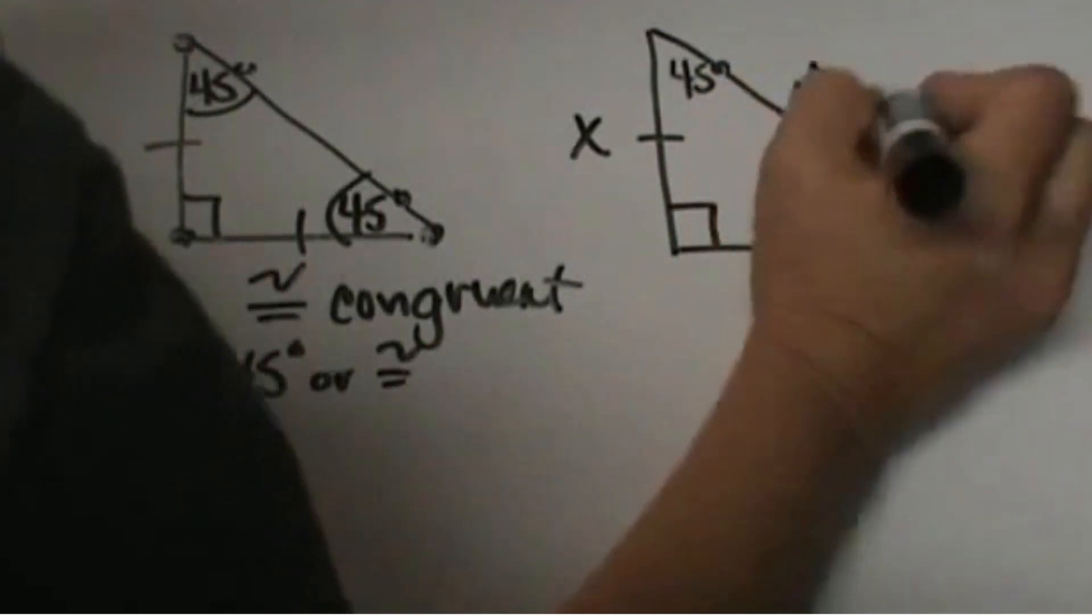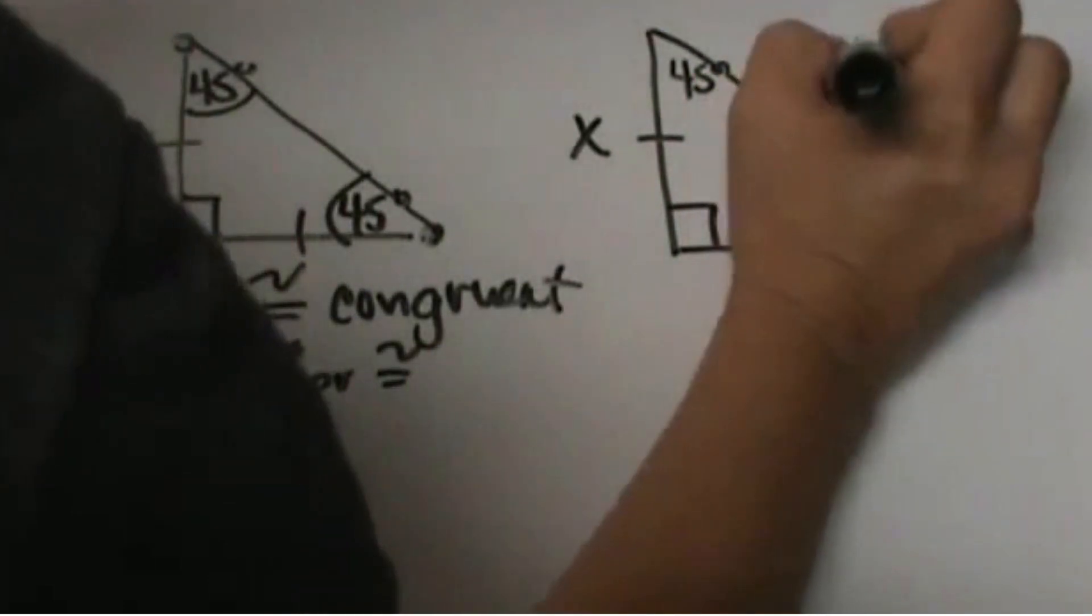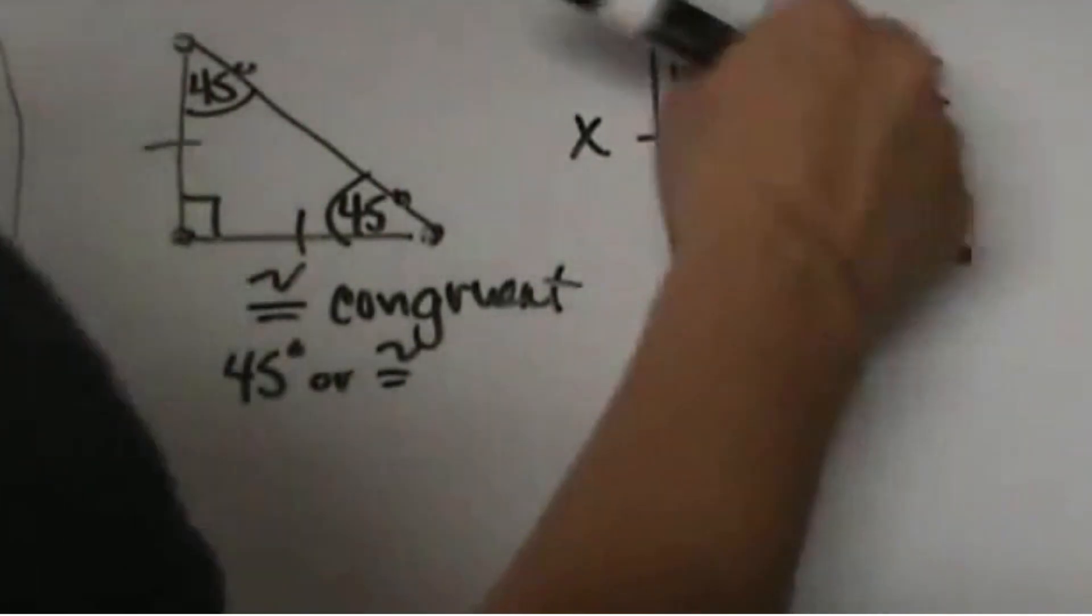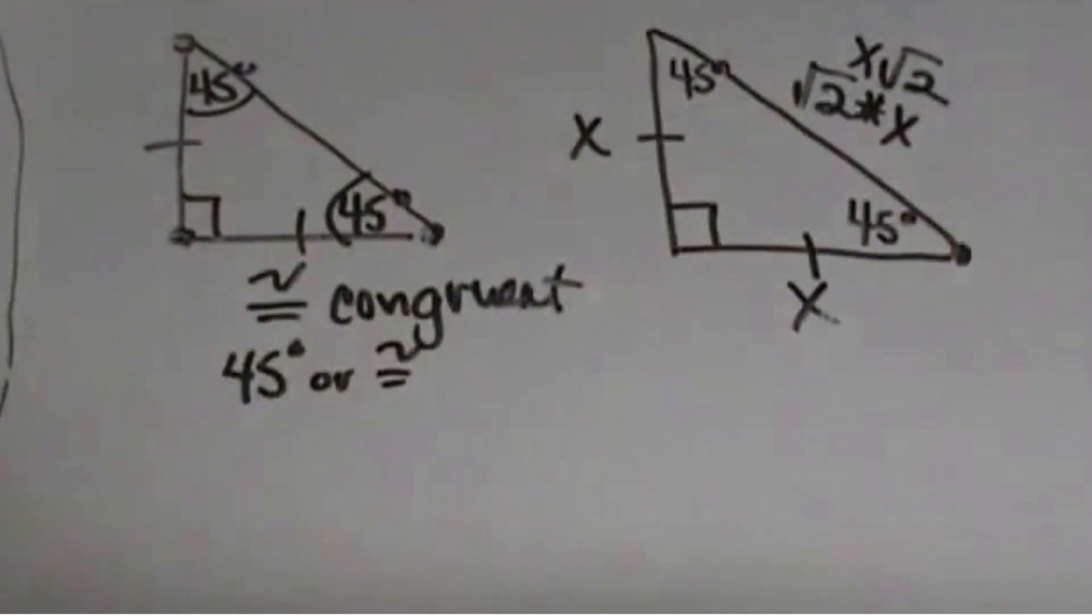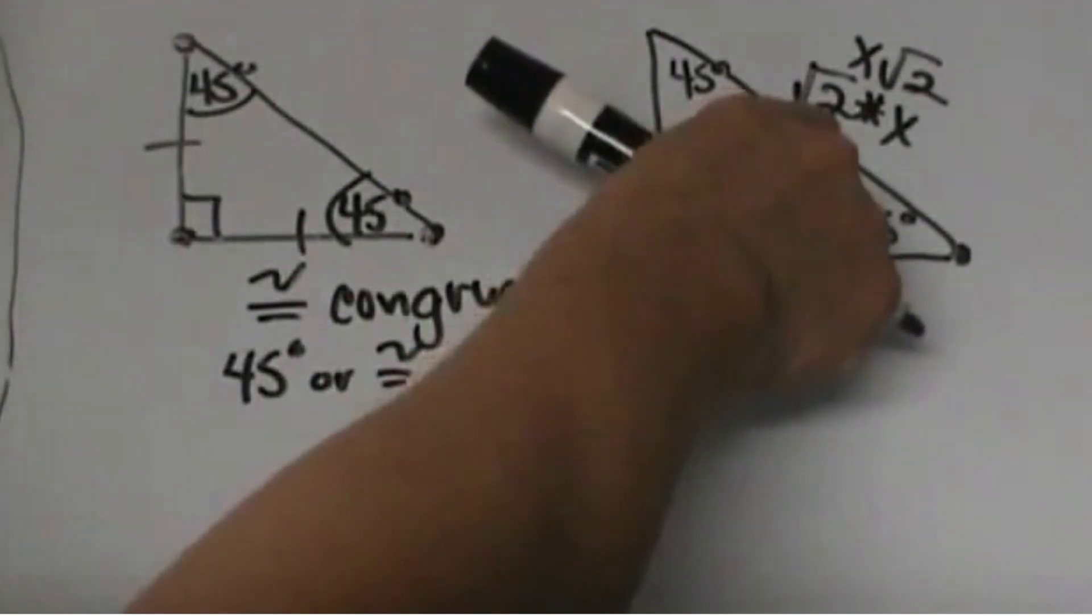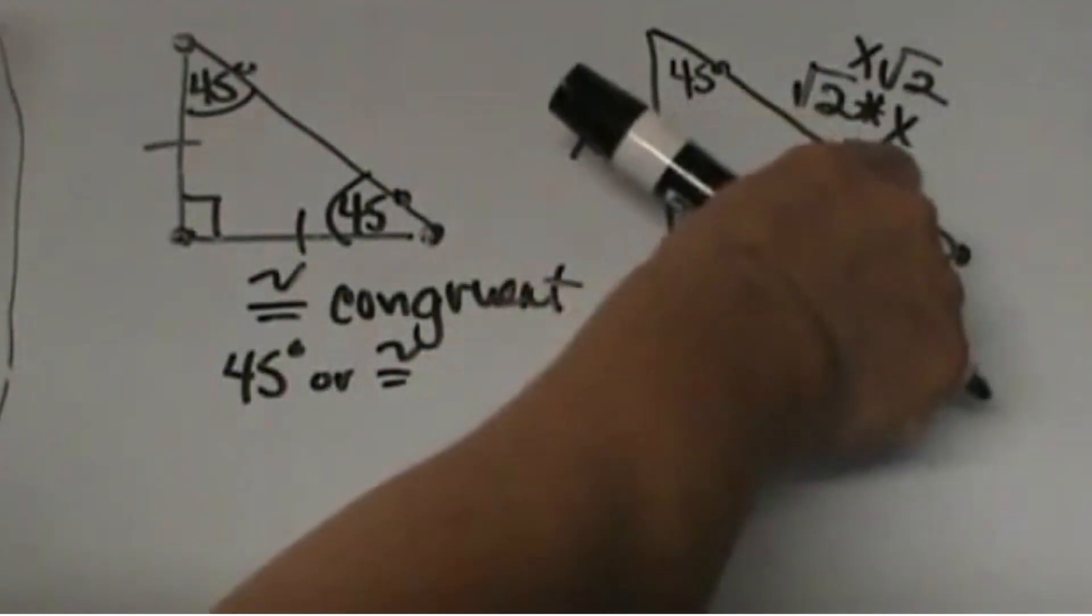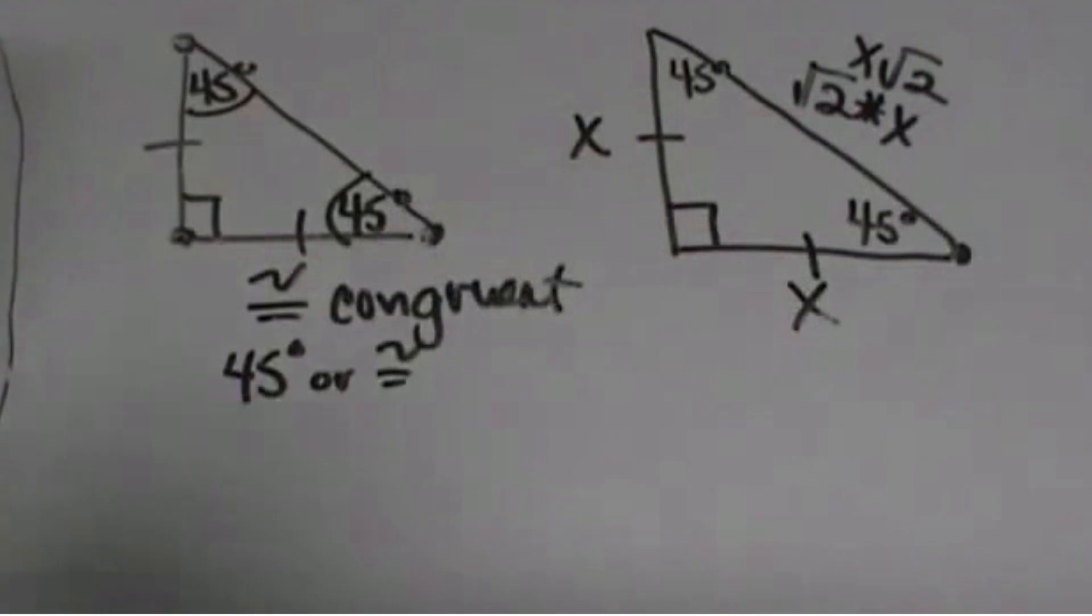So it is square root of 2 times x, and I am going to write it as x square root of 2 because that is how generally you write the coefficient in front of the radical. For your note taking guide, you are going to take the square root of 2 times whatever value x is. That is the rule and that will always work.